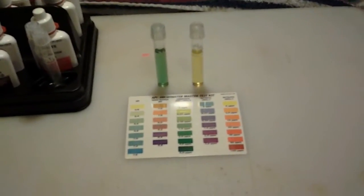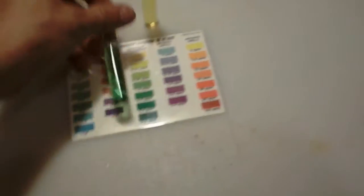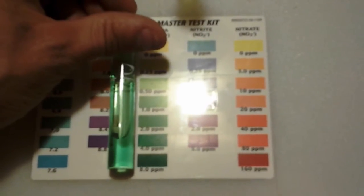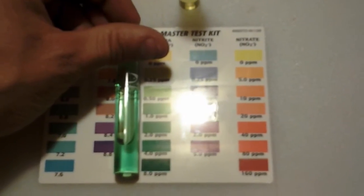Sorry about the camera being shaky, but earlier today I tested my tank and my ammonia levels were high. As you can see right here. And looking down on the scale, we're probably talking 3 parts per million.